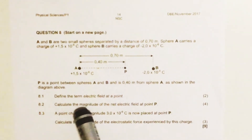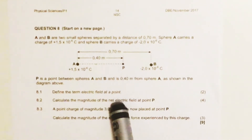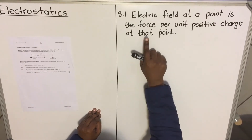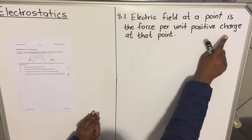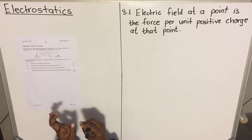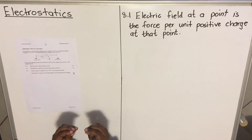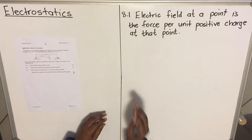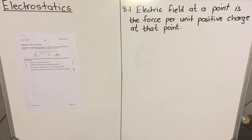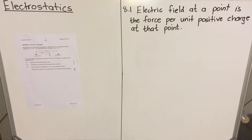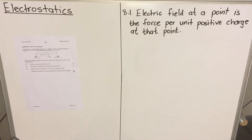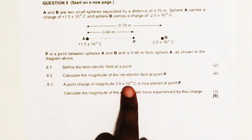Question 8.1 asks you to define the term 'electric field at a point.' You should know this definition. The electric field at a point is the force per unit positive charge at that point. With those drawings, when testing electric fields, we always place a small positive test charge — that charge feels a force, which tells us the electric field exists there.